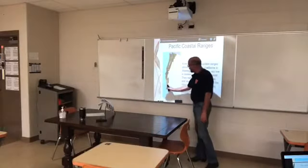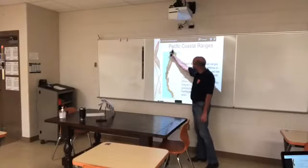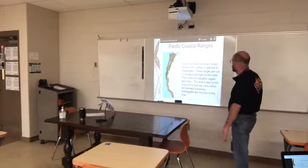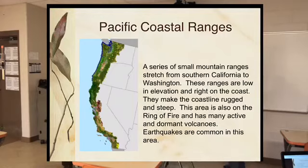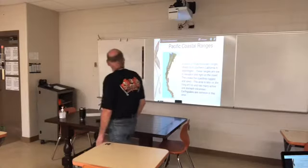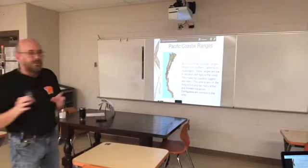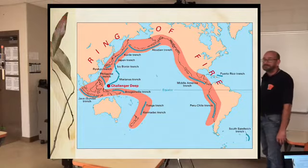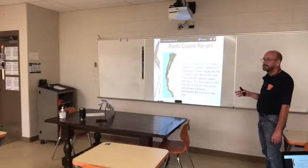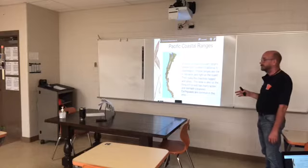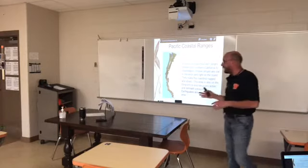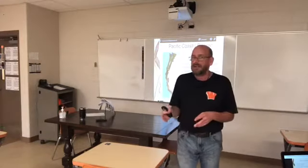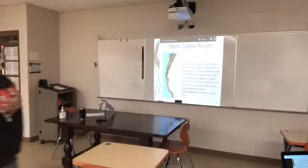The Pacific Coastal Range is right here along the Pacific coast, going from Southern California to Washington, really up into Canada and down to Baja Mexico. The big thing about this is that it's part of the Ring of Fire — where the plates meet, and it tends to be a spot where there's a lot of tectonic activity, whether that be volcanoes or earthquakes.